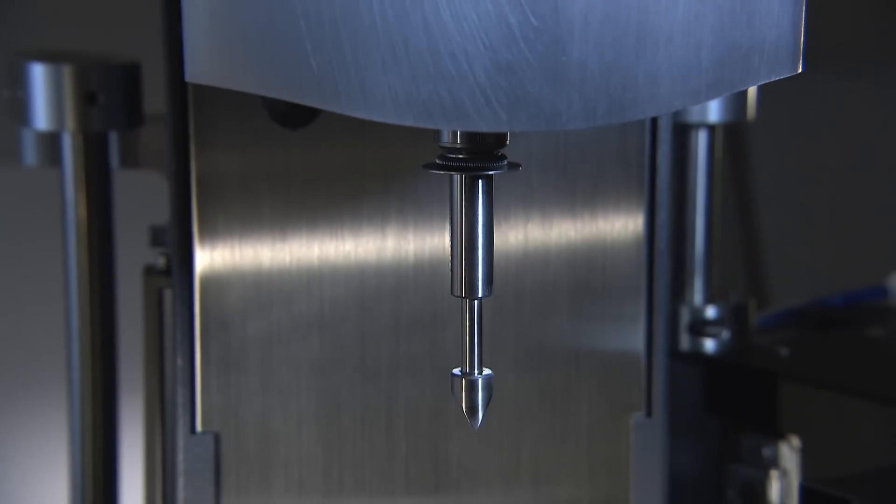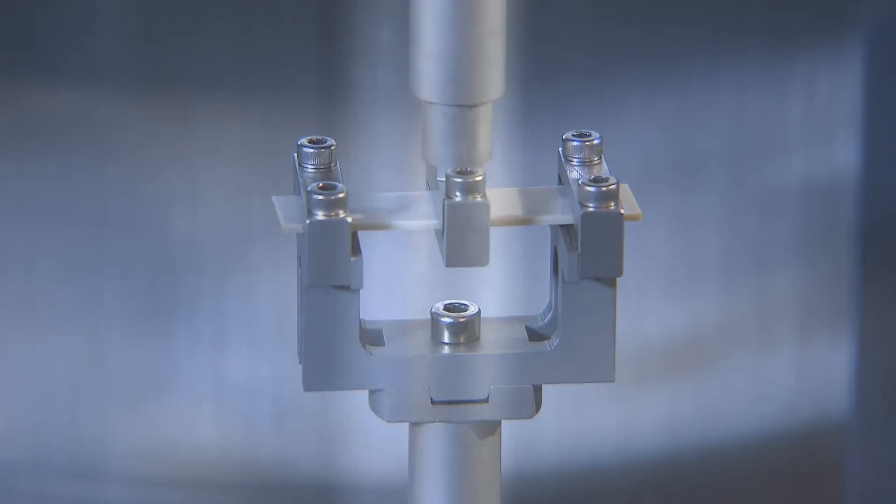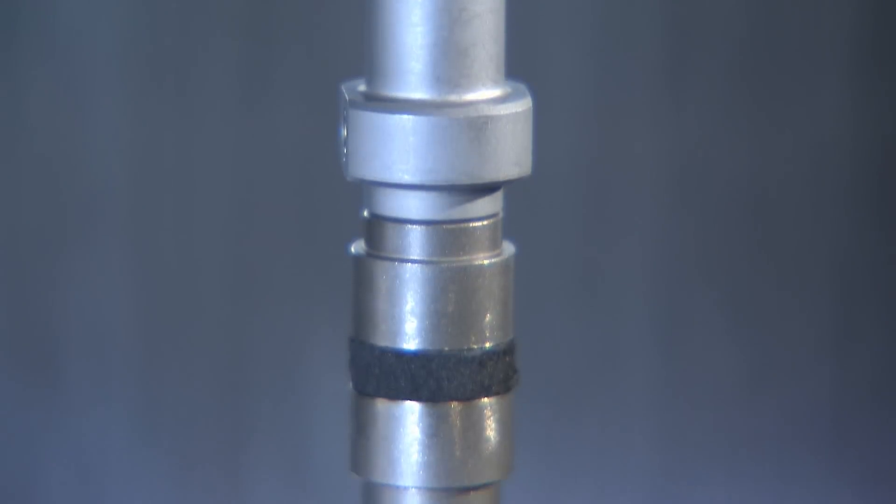The RSA-G2 features a variety of highly rigid stainless steel sample clamps to accommodate multiple modes of deformation and the widest range of sample stiffness.